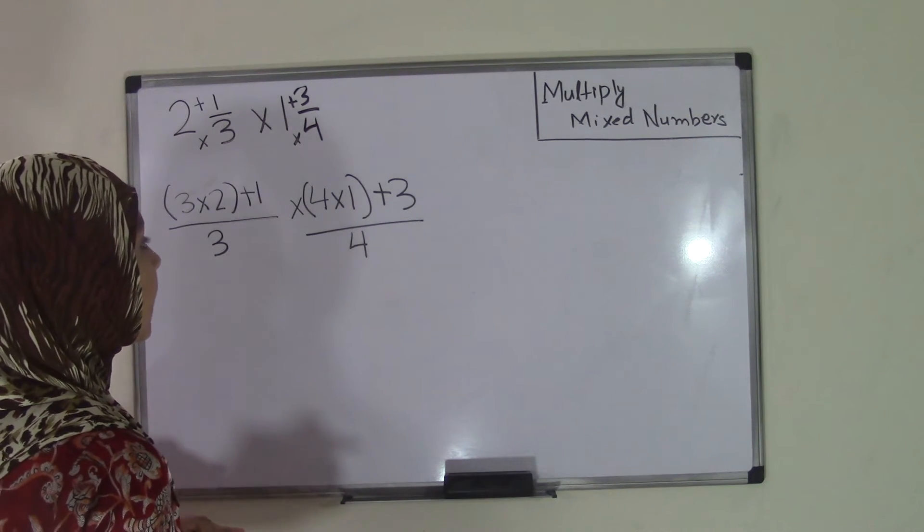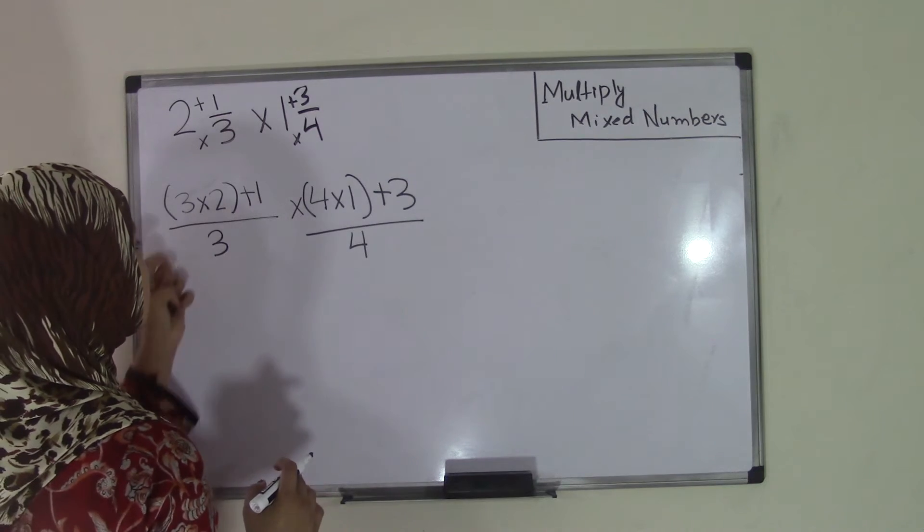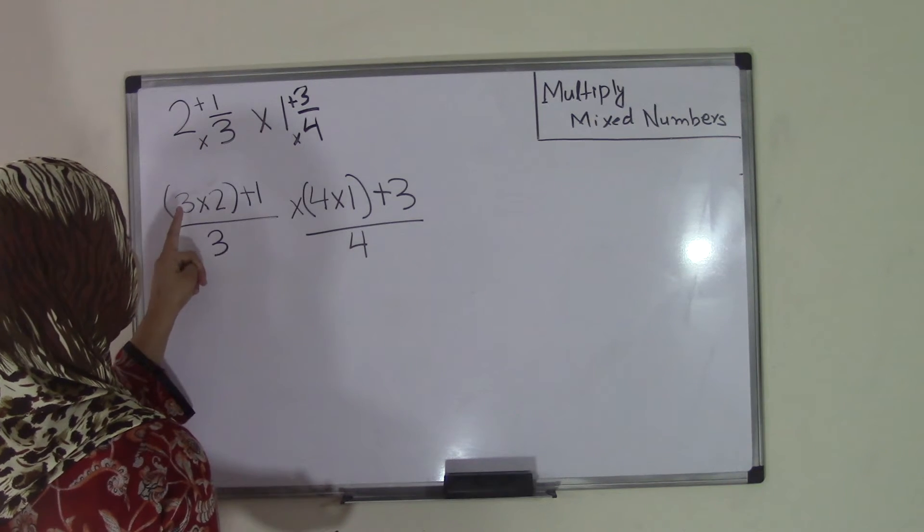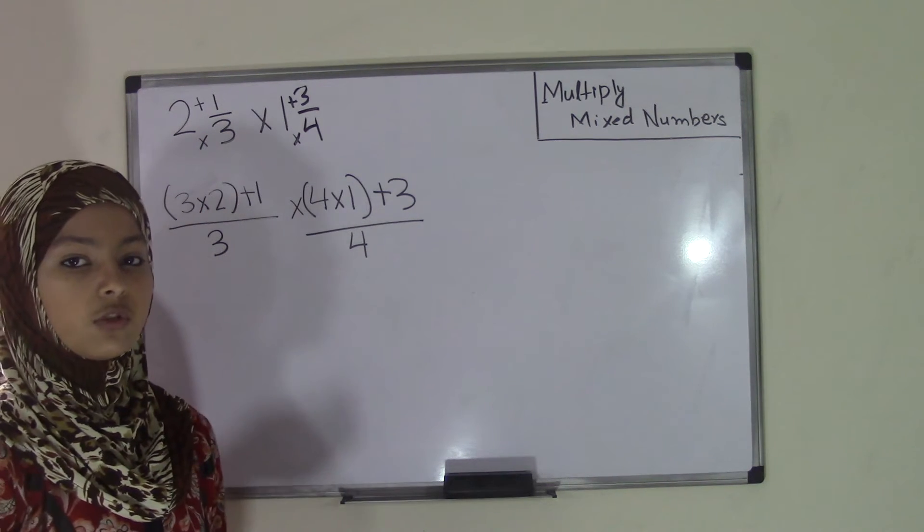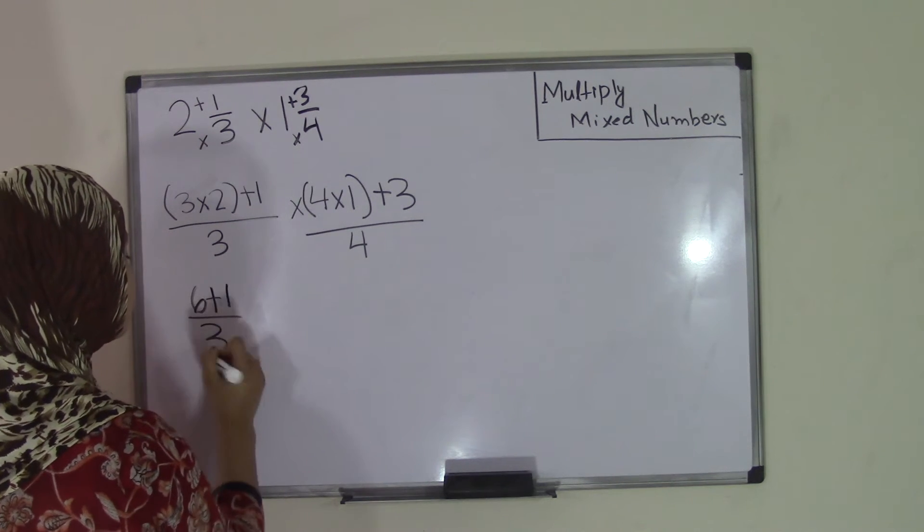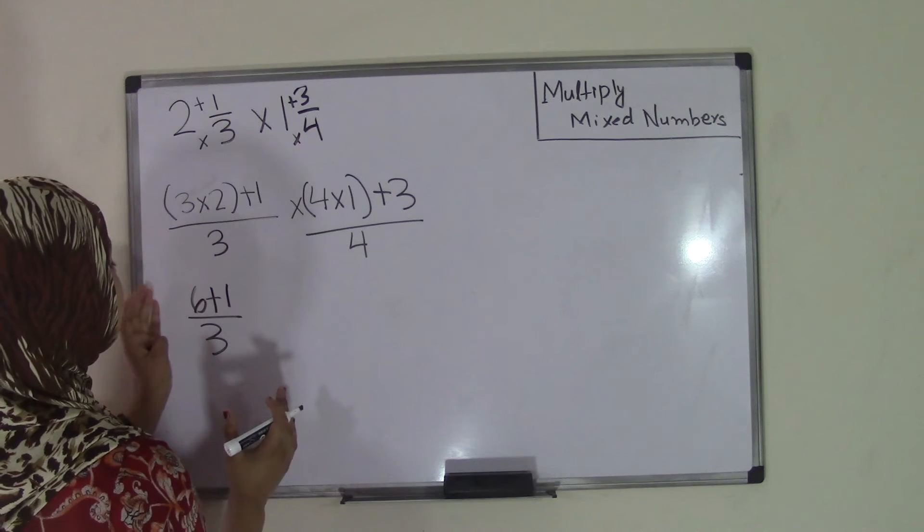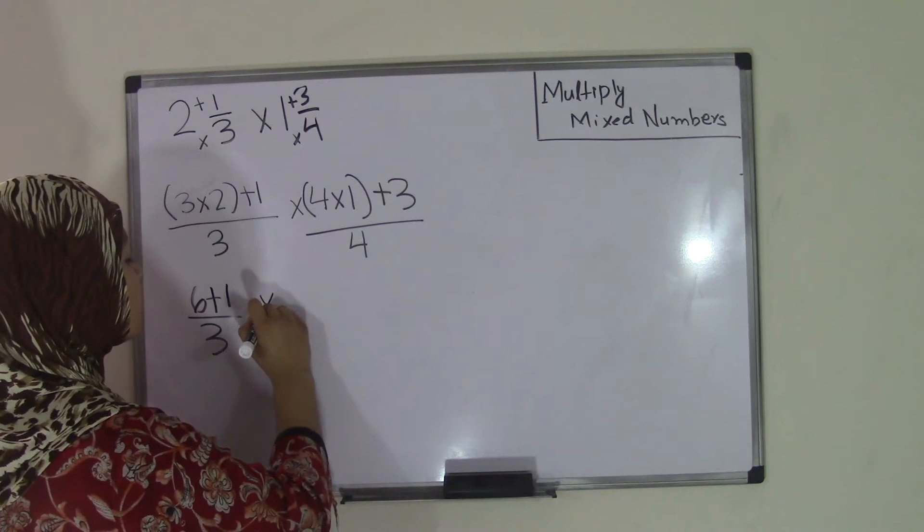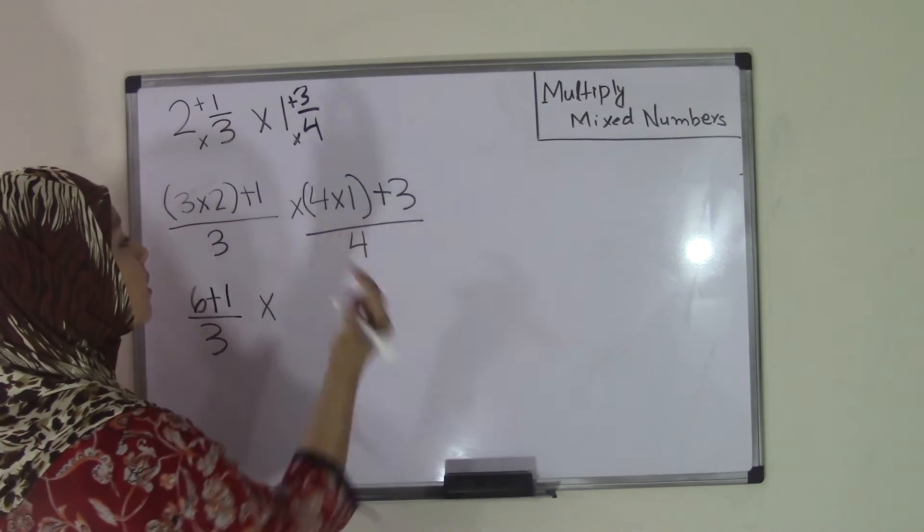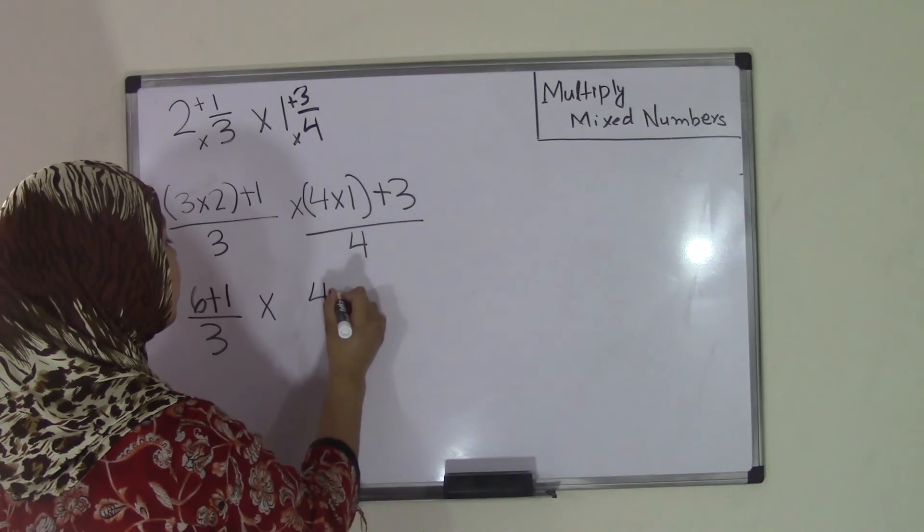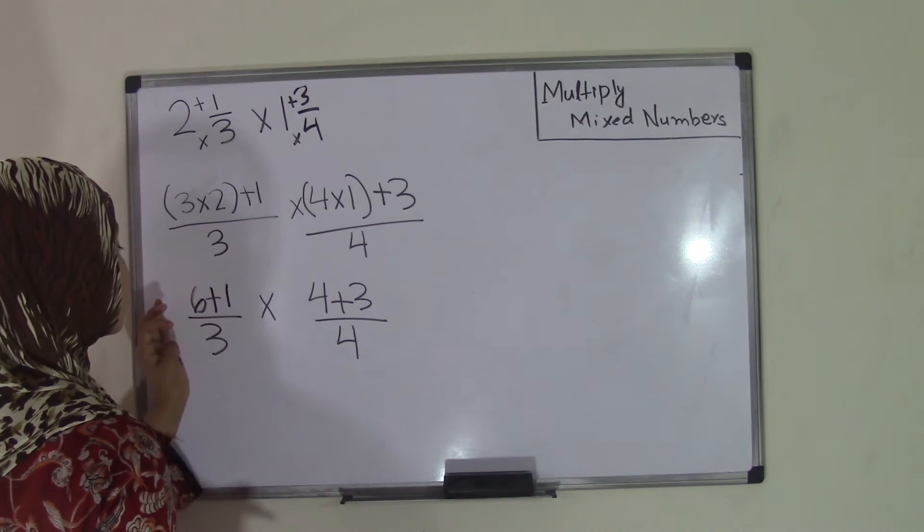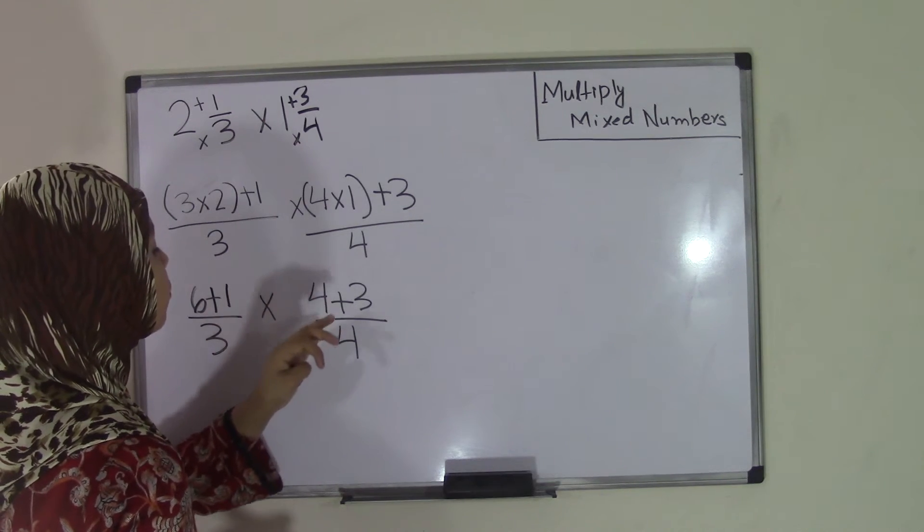Now this may seem a little complicated, but remember, we're going to use the PEMDAS method to solve these numerators. So according to PEMDAS, we have to do parentheses first. So we're going to have to do 3 times 2. We all know that 3 times 2 is 6. So now we have 6 plus 1 over 3. So now this is simplified. Bring down the multiplication sign and do the same for our second mixed number, or now our improper fraction. So 4 times 1 is 4 plus the 3. So 4 plus 3 over the same denominator, which is 4. So now we have (6 + 1)/3 times (4 + 3)/4.